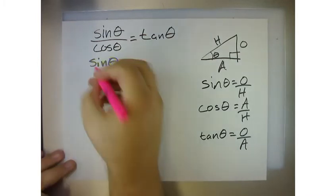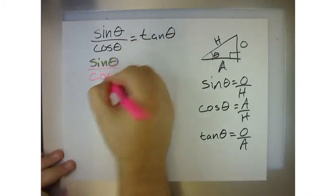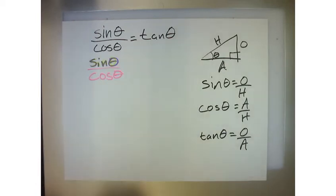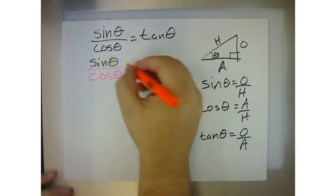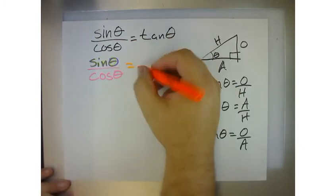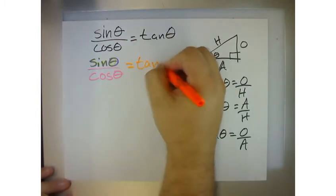And then this would be cosine of theta. Okay? And then this would be tangent of theta. Now I'm doing this on purpose, and then I'll go back over it with a black marker so you can see it better. Okay?